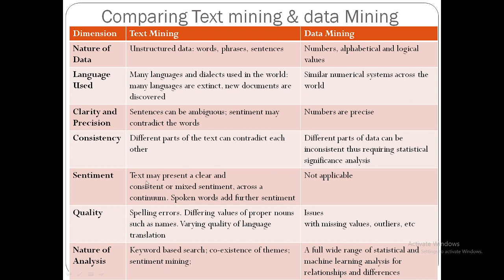Regarding sentiment: text may present clear, consistent, or mixed sentiment across a continuum, and spoken words add further sentiment, whereas sentiments are not analyzed in data mining. Regarding quality: text mining has issues like spelling errors, differing values of proper nouns, and varying quality of language translation; data mining has issues with missing values and outliers. Nature of analysis: text mining uses keyword-based search, co-existence of themes, and sentiment mining; data mining uses a full range of statistical and machine learning analysis for relationships and differences.